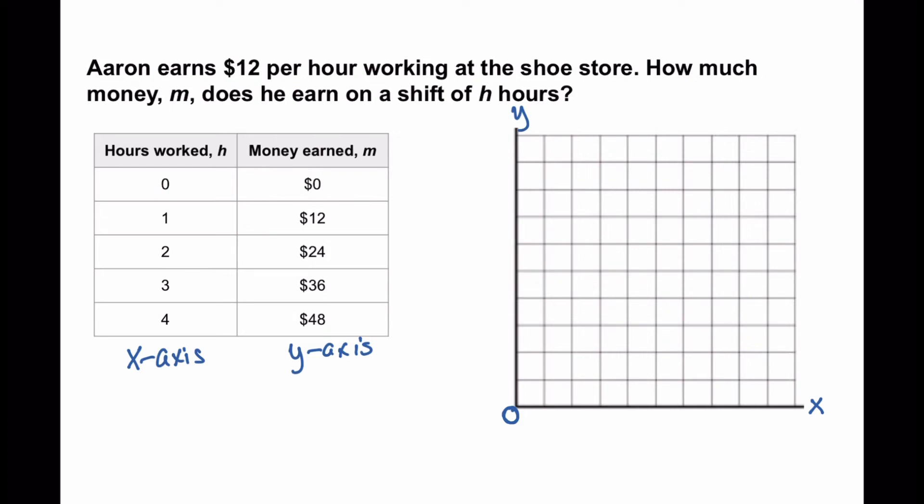So as you can see, we start at zero, then we have one, two, three, four. And we can keep going until we finish numbering, but I'm going to stop here. And we're going to label this side hours.